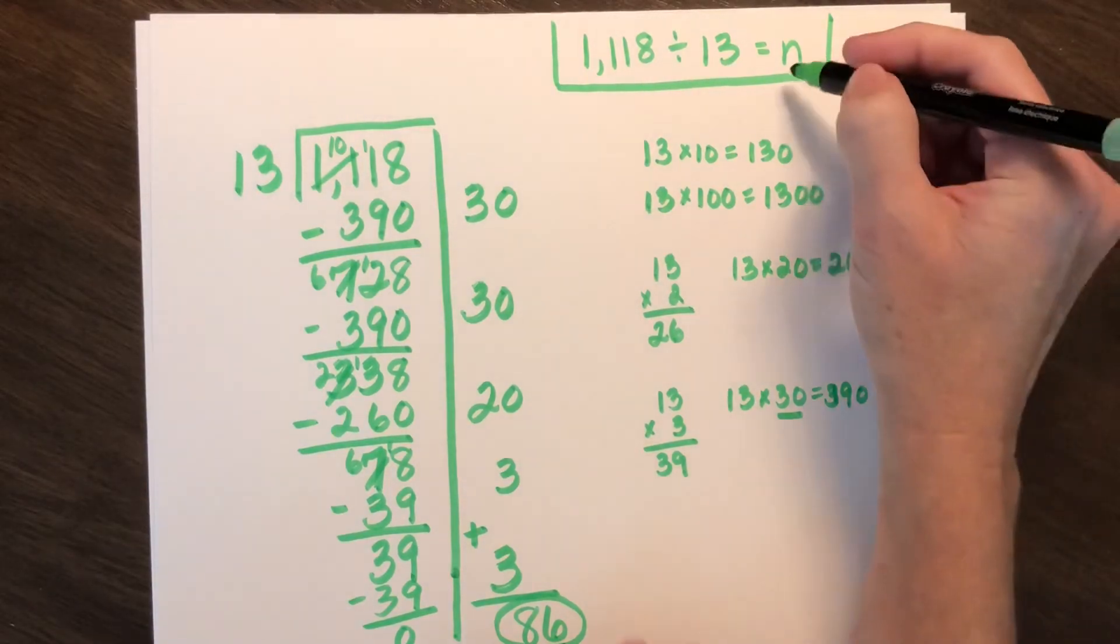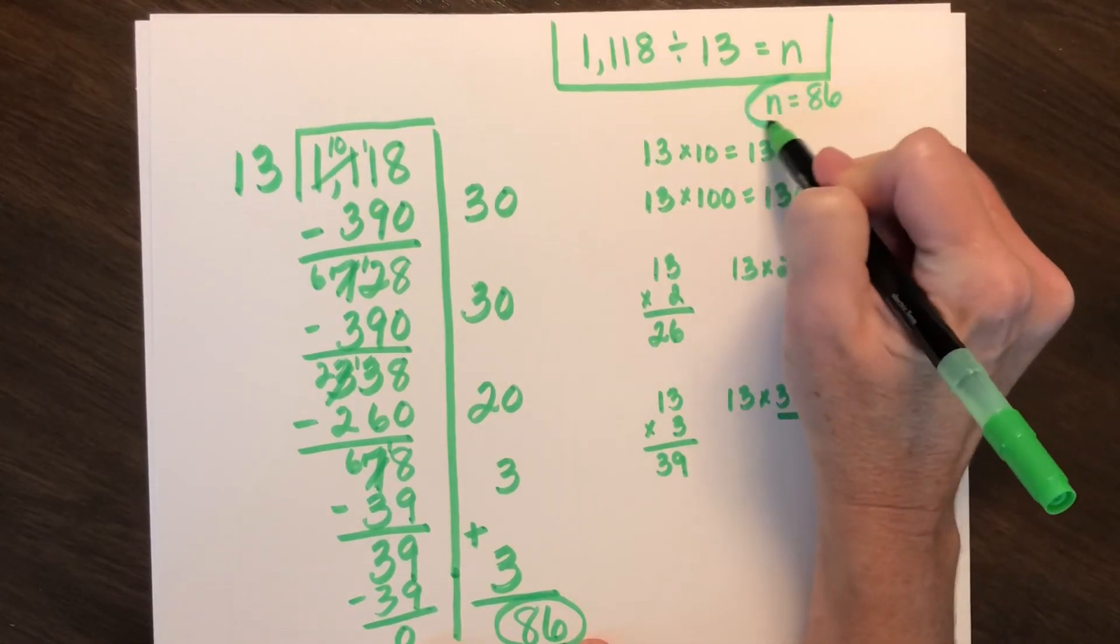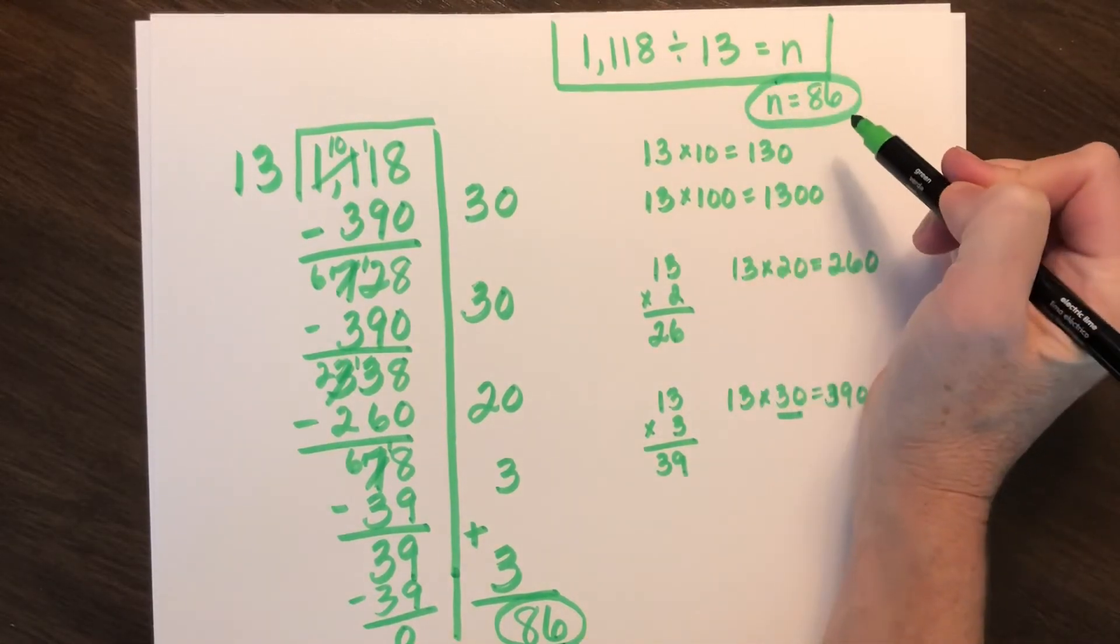Again, with all of these, I can go back and represent n equals 86. So just remember that that variable is representing a number.